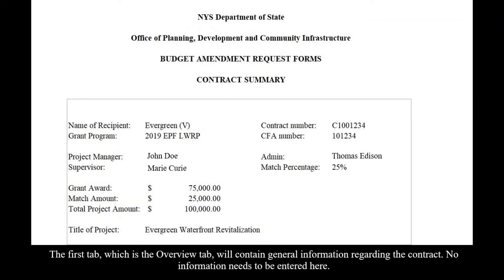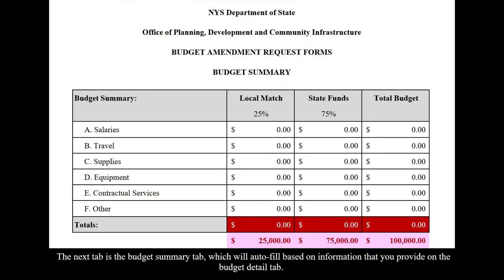The first tab, the Overview tab, will contain general information regarding the contract. No information needs to be entered here. The next tab is the Budget Summary tab, which will auto-fill based on information that you provide on the Budget Detail tab.